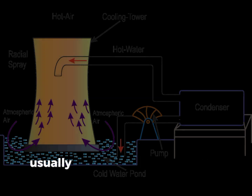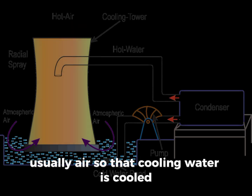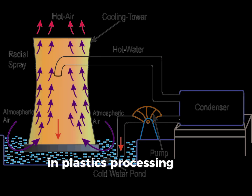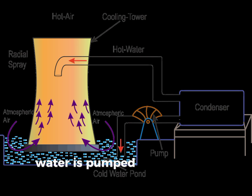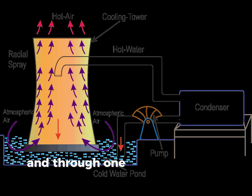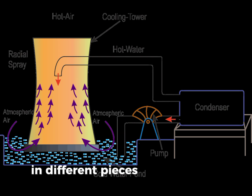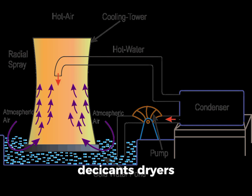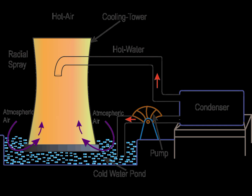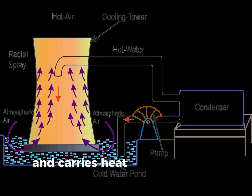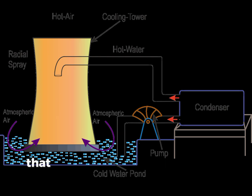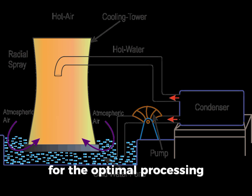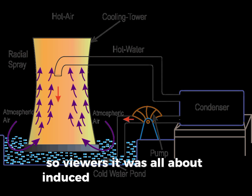A cooling tower extracts heat out of the cooling water and pushes it into another medium, usually air, so that the cooling water is cooled and ready to be recirculated. In plastics processing, cooled process water is pumped out from the cooling tower base and through one or more cooling circuits in different pieces of equipment such as processing tools, molds, desiccant dryers, and water-cooled chillers. The processed water absorbs and carries heat away from the equipment so that operating temperatures stay within the range required for optimal processing.